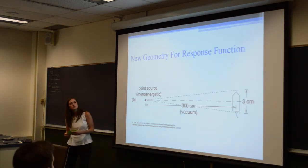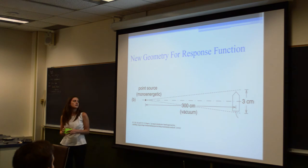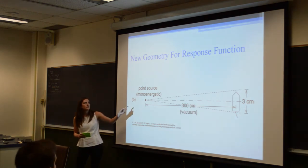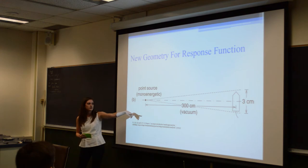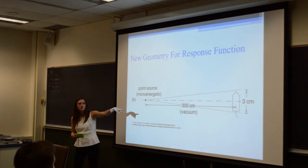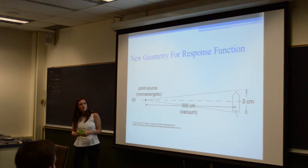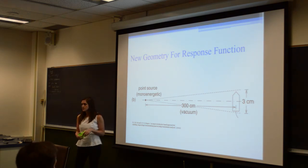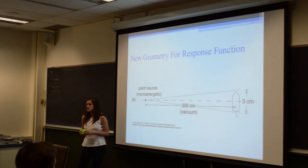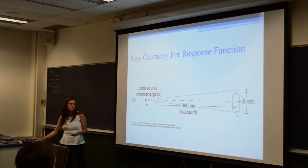This is the new geometry that they used, and as you can see it's a lot more simple. They used a mono-energetic point source, and then 300 centimeters away in a vacuum, they have their ion chamber. One of the main differences is that their ion chamber is 3 centimeters. I used the exact dimensions given for the caps from a similar report used for experimental measurements, so it will compare well to experimental data and we have exact dimensions.